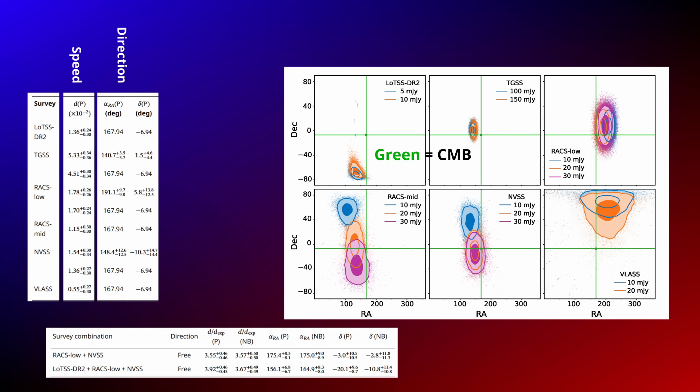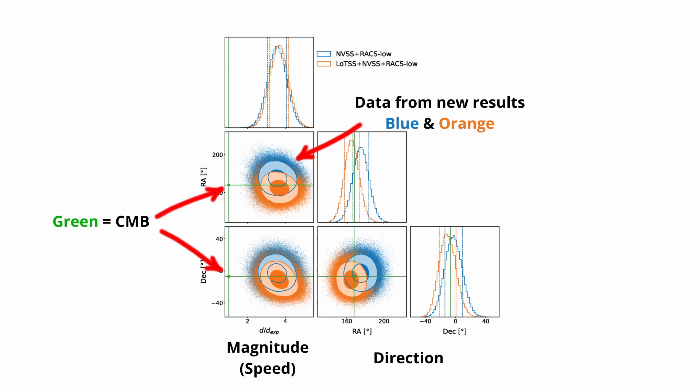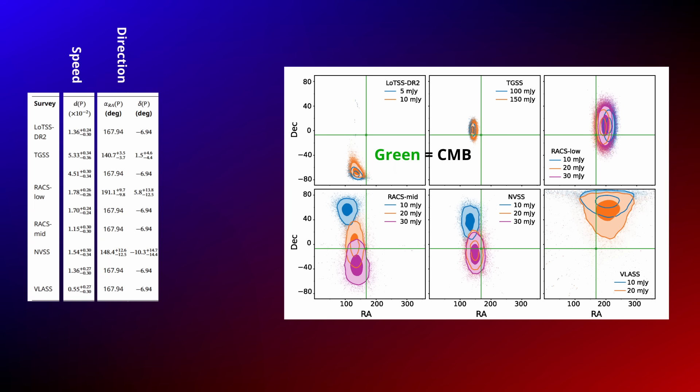This is why the new results matter so much. It isn't just repeating the old radio anomalies, it fixes the methodology that made those anomalies unreliable in the first place. It cleans up the statistics, resolves the long-standing disagreements between surveys, and leaves behind a dipole that is cleaner, stronger, and far harder to explain away.